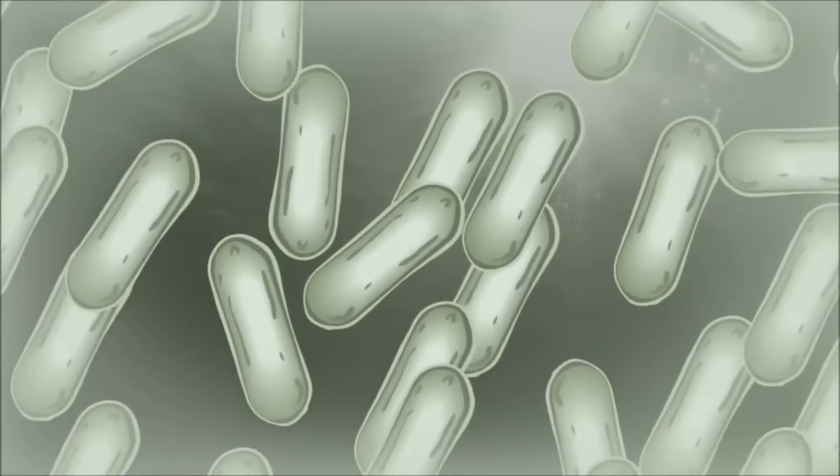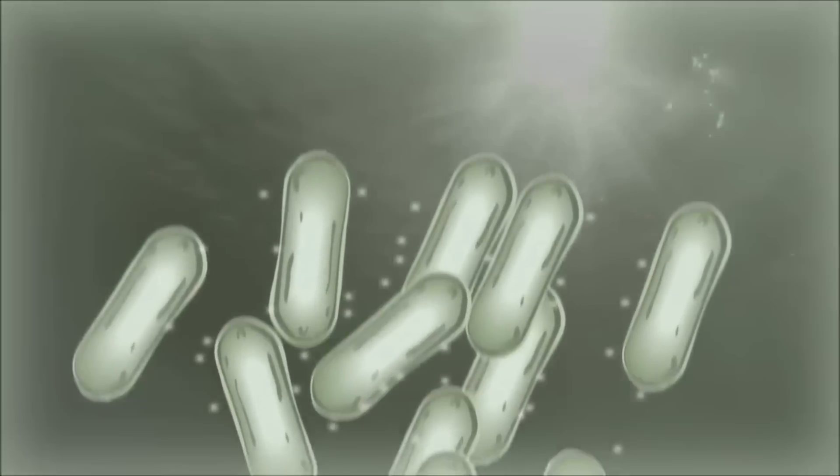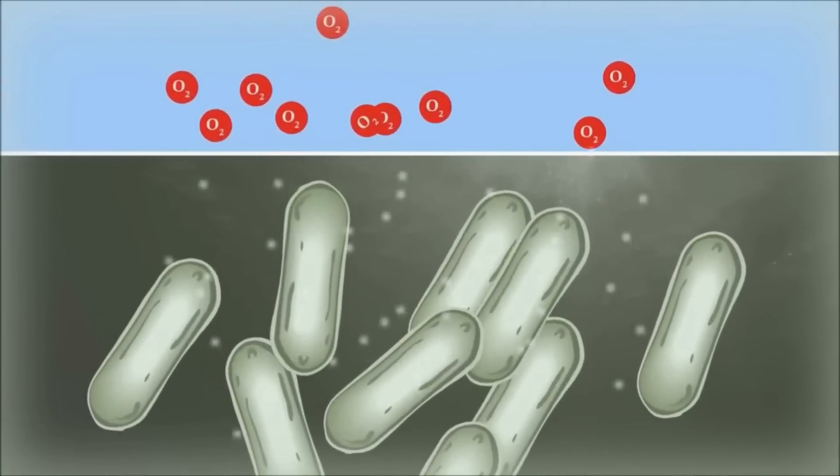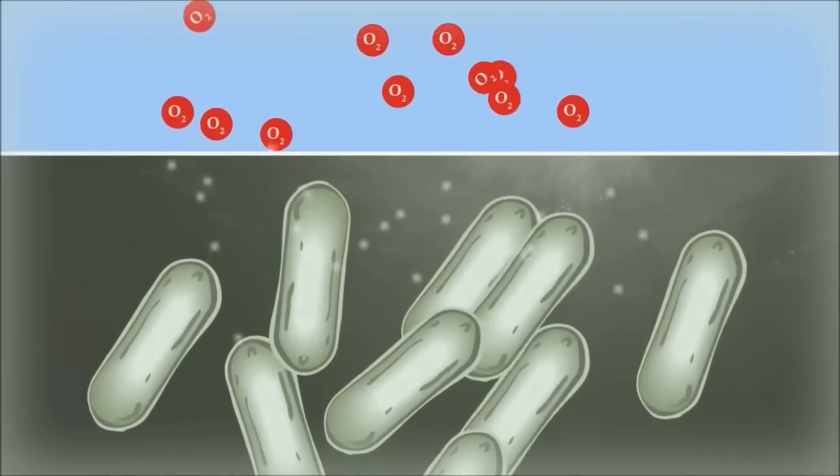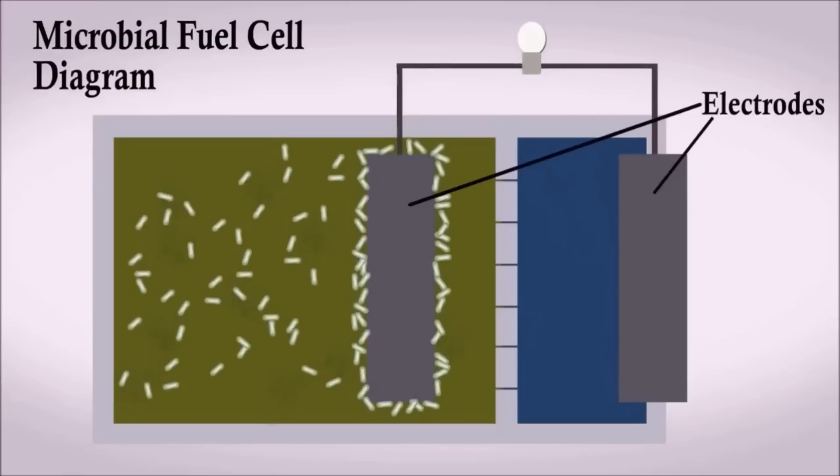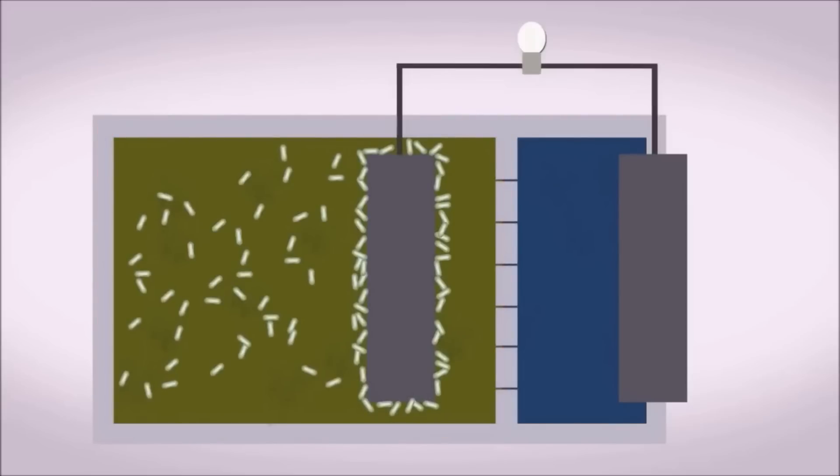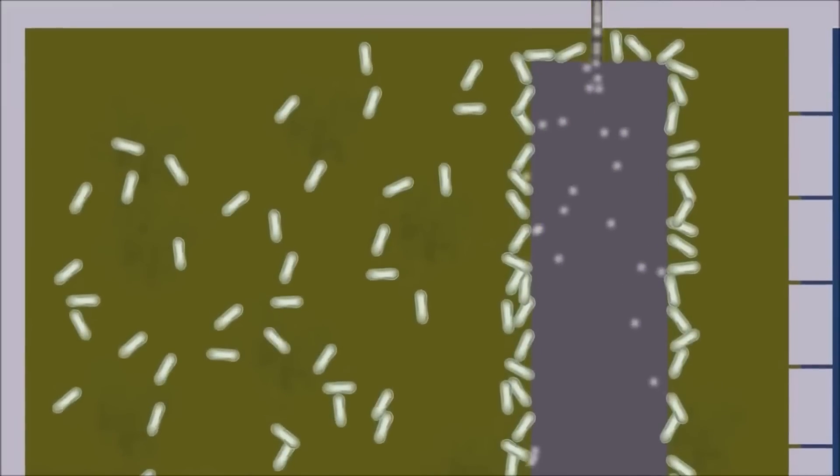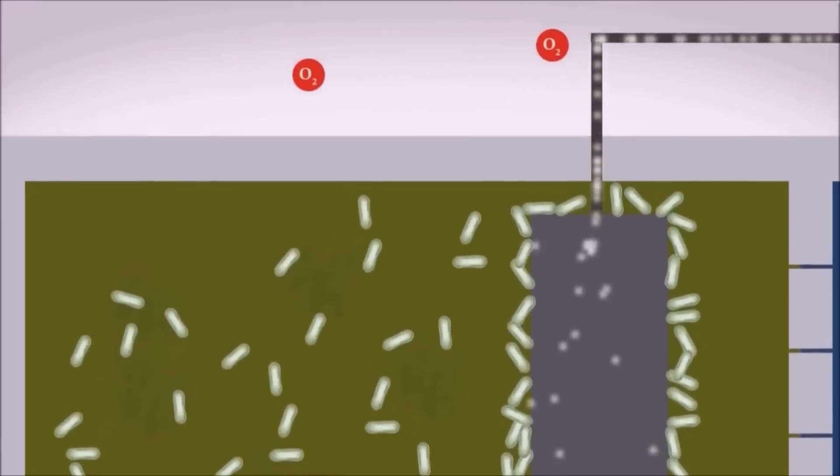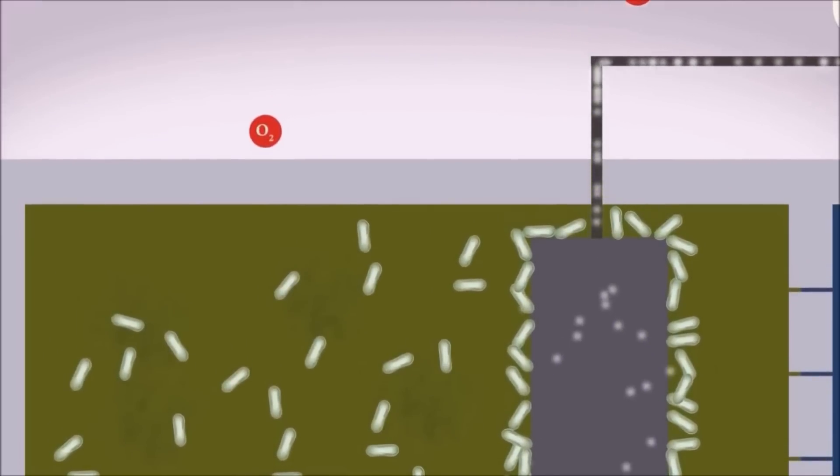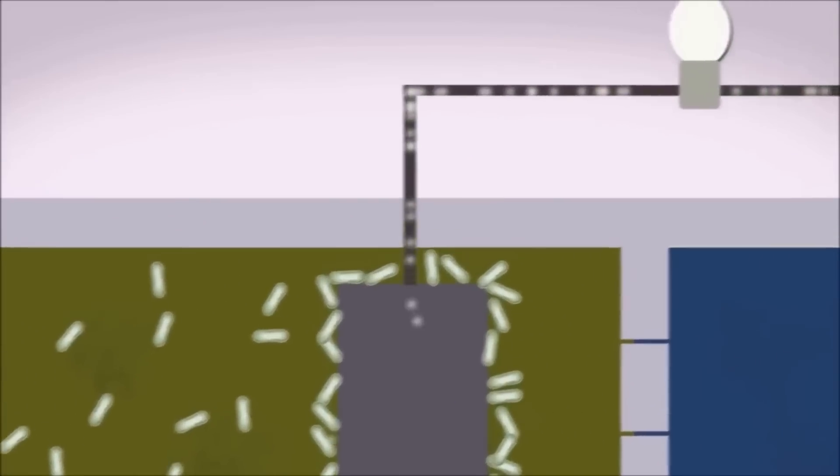Now just like in an ordinary battery, a microbial fuel cell uses chemical energy to generate electricity. A microbial fuel cell has two electrodes held in separate chambers. The anode chamber that contains the bacteria is anaerobic, that means it doesn't have oxygen. The cathode chamber is aerobic and that means it does have oxygen. The oxidation process occurs inside the bacteria living in the anode chamber and takes advantage of the oxidation that bacteria carry out naturally during cellular respiration.